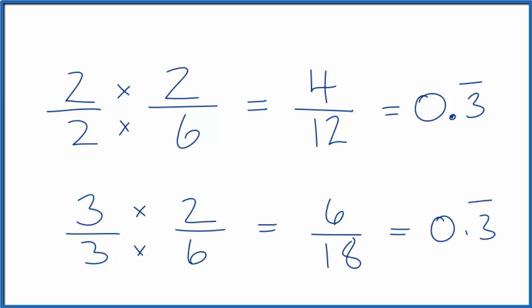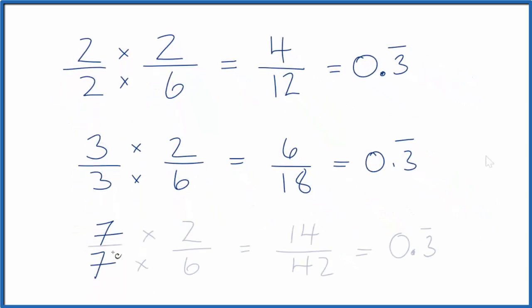One more. How about 7 over 7? So again, we multiplied by 7 over 7, which is just 1. And we have the same value, 0.3 repeating, but we now have a different numerator and denominator. So this is another equivalent fraction for 2/6. This is Dr. B. Thanks for watching.